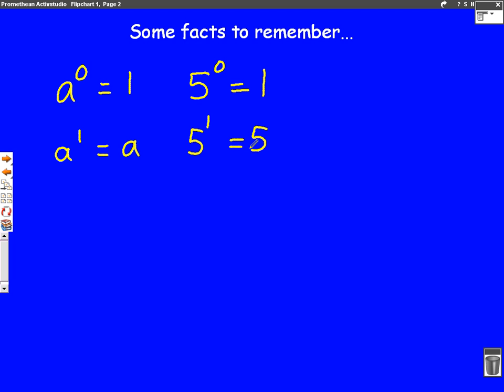Next one: what would a to the minus one be? Some people get a bit stuck on this, so you need to remember it just means one over a. The minus means one over, so five to the minus one would be one over five.